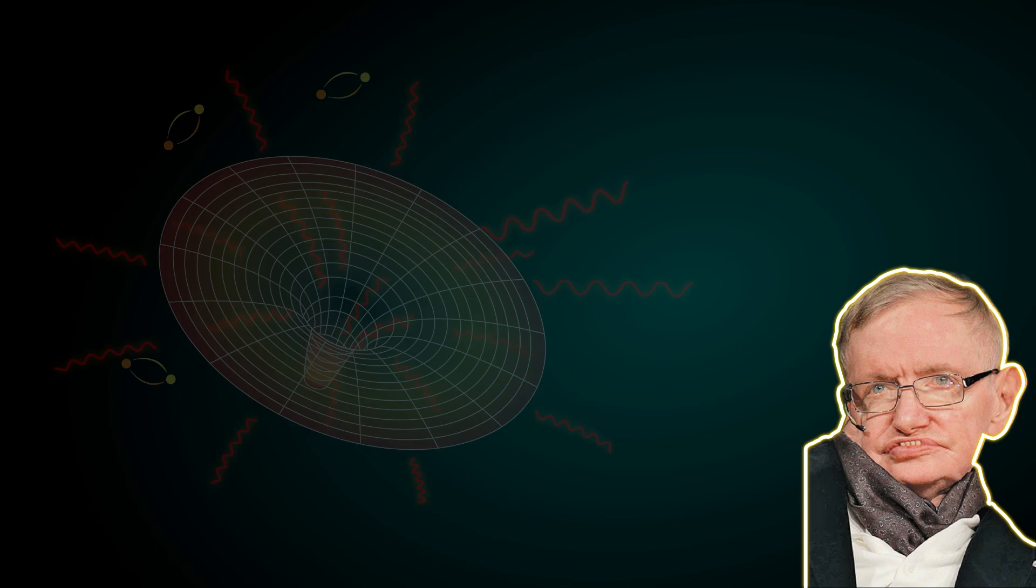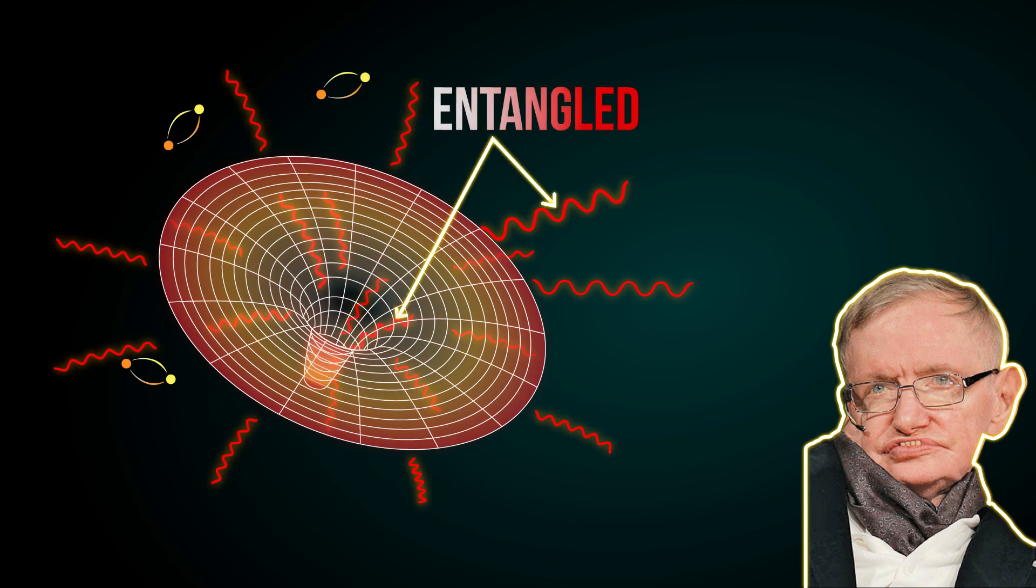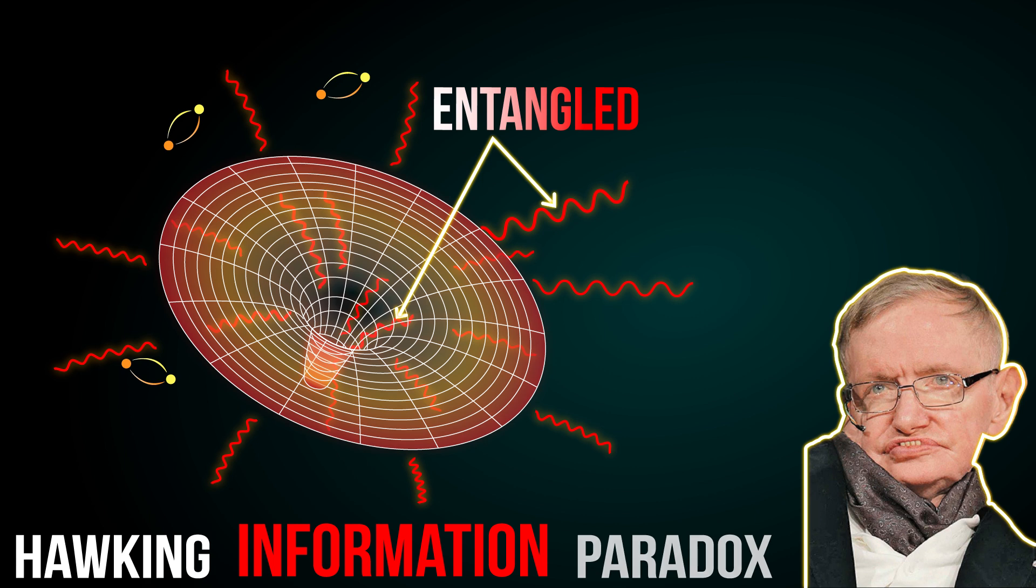If Hawking is right, it can break physics and together with that, the Western civilization we love and admire. At the core of Hawking's paradox is the concept of entanglement. In this video, we will show how entanglement holds the secret to resolving Hawking's paradox.